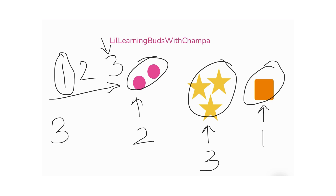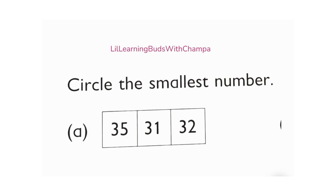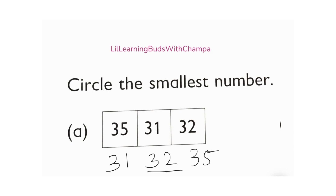Now let's try this example — circle the smallest number. Before circling, can we first rearrange? Does 35 come first, or 31, or 32? Which comes first? 31! Yeah, 31 comes first. Next comes 32, and then comes 35.